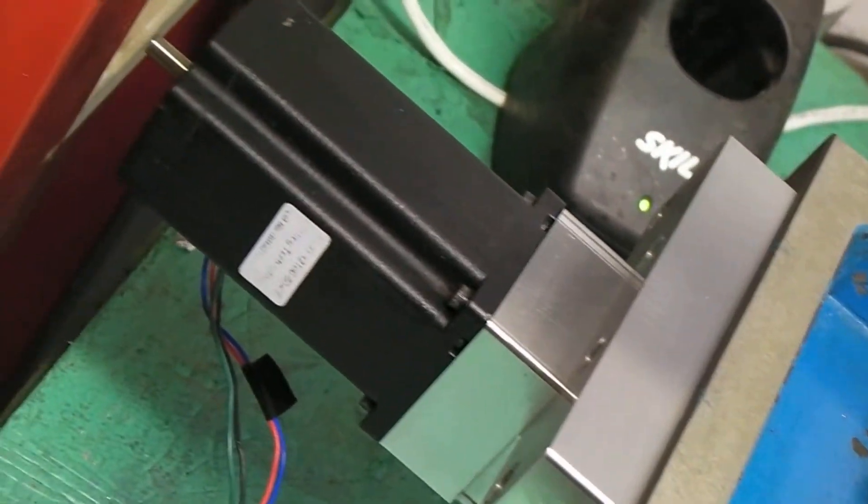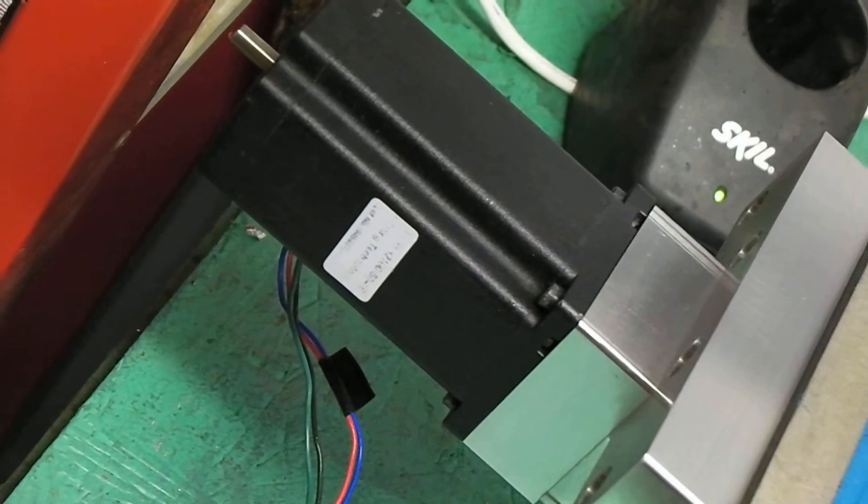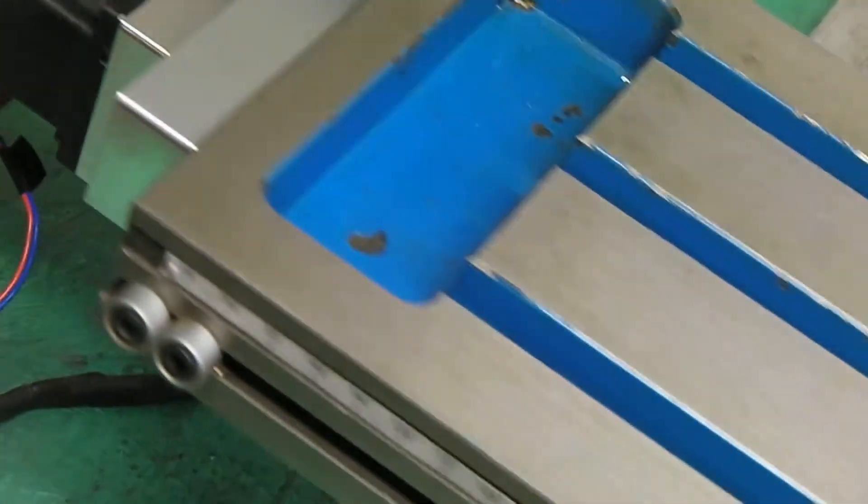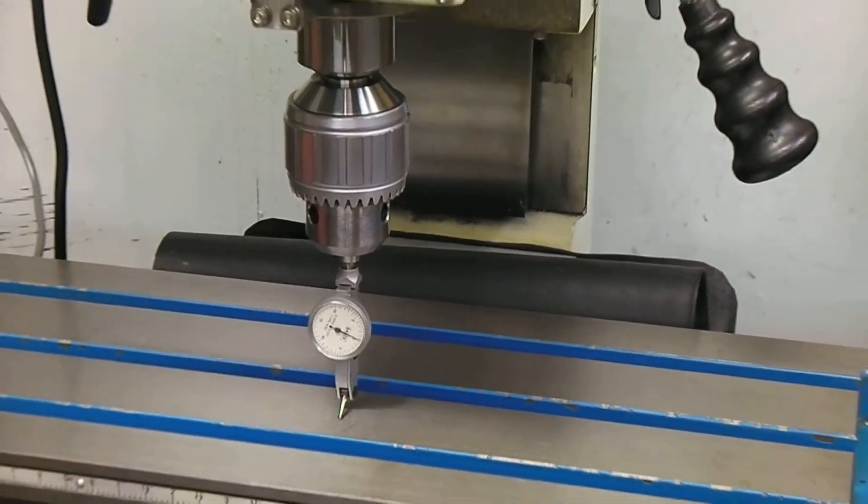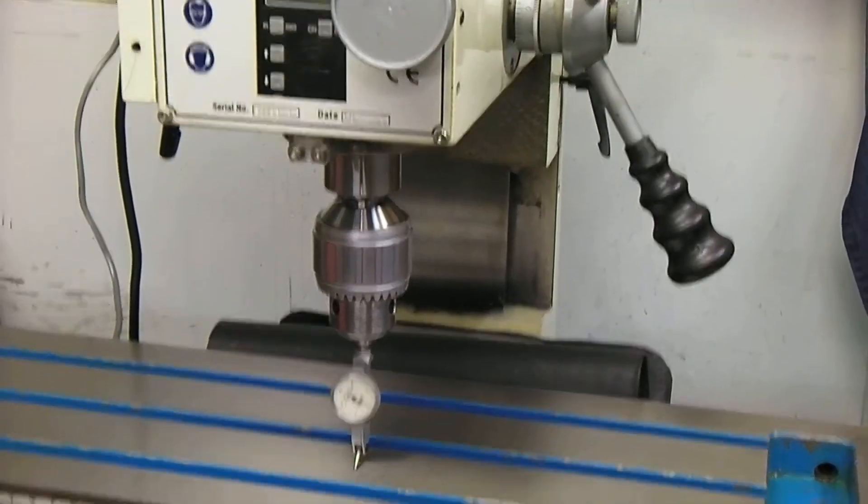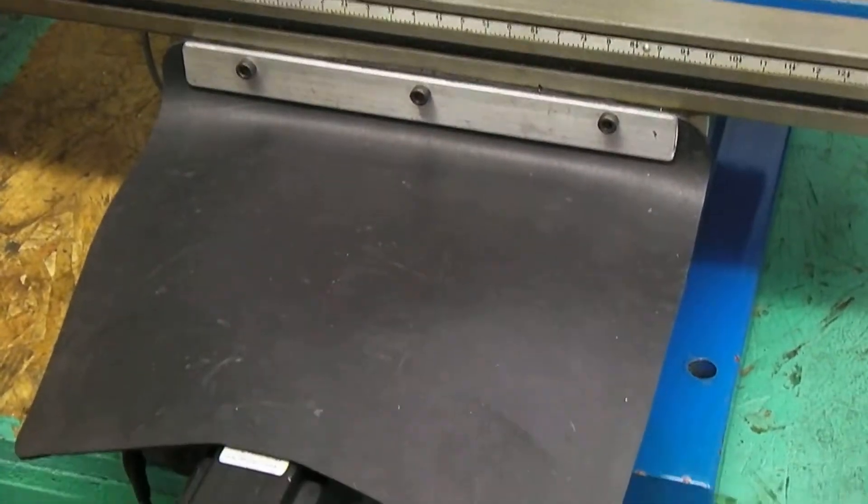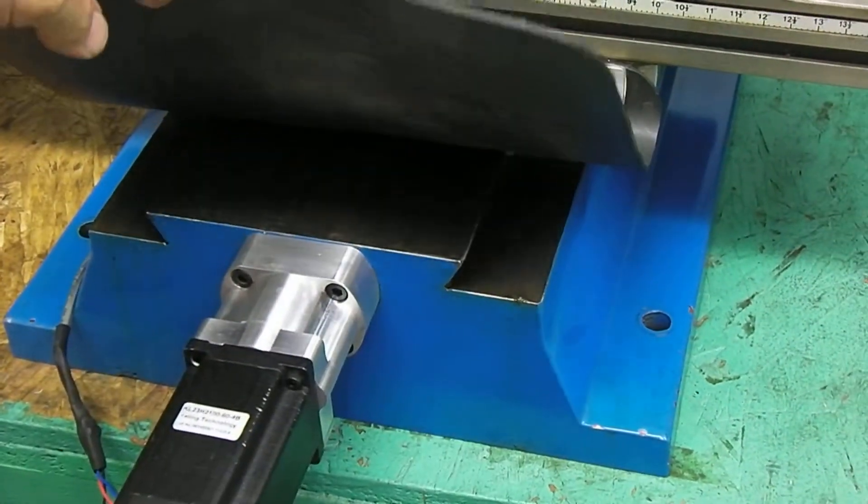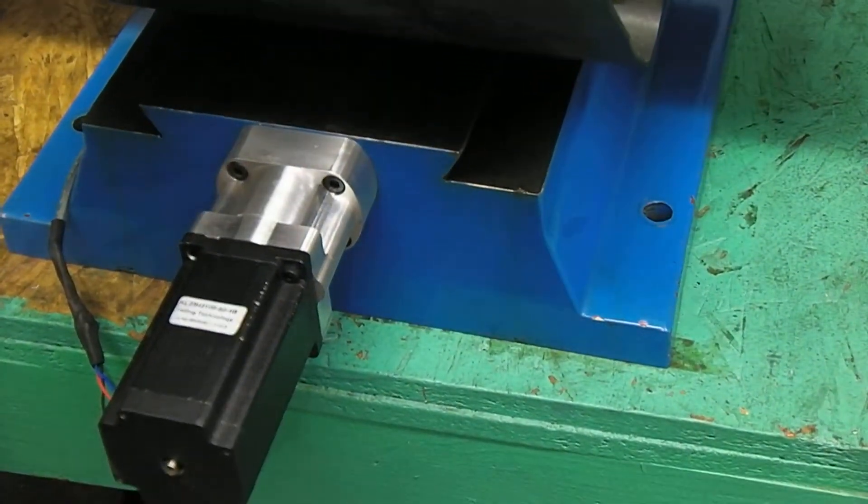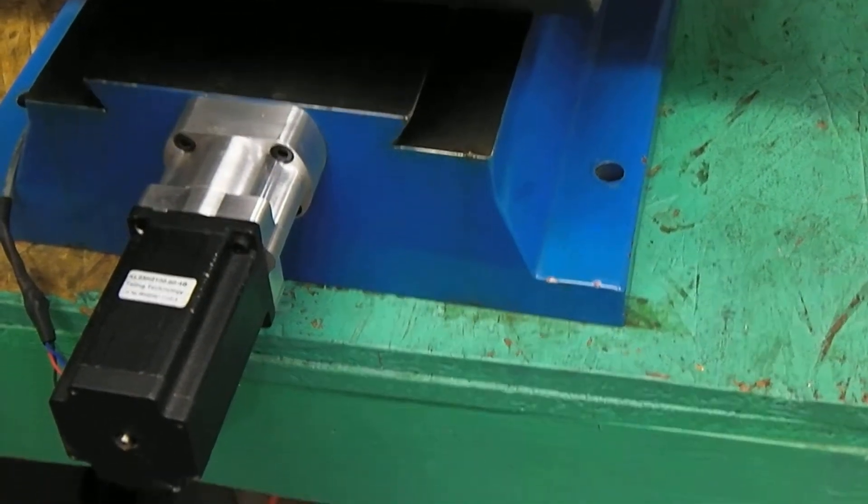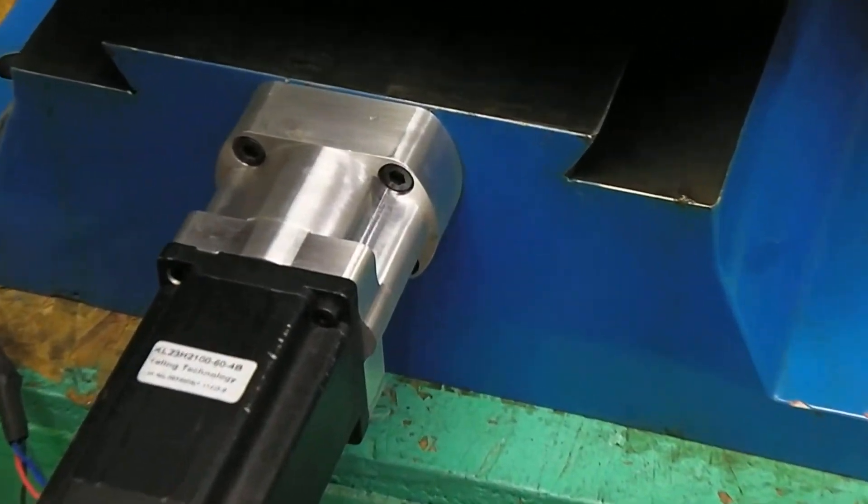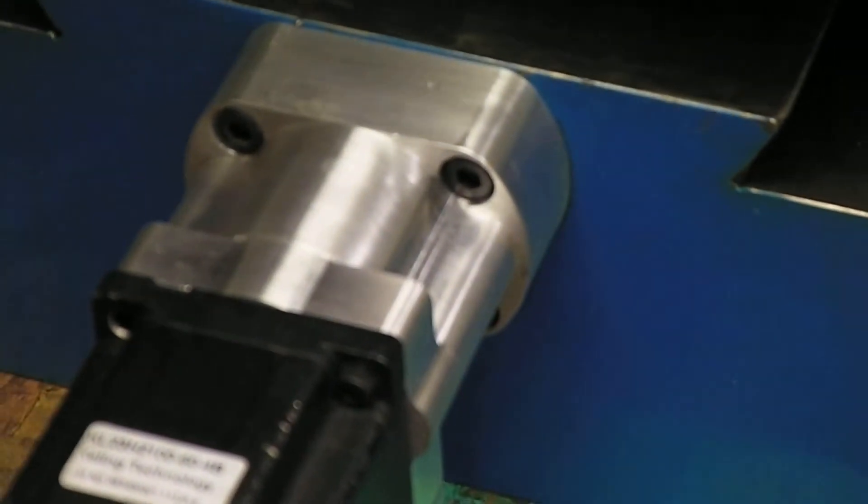And on this side, we've got the 575 NEMA 23 stepper. And then I put the rubber chip guards on it. The Z accordion thing kind of didn't make it. So there's the Y mount with the 575 NEMA 23 stepper.